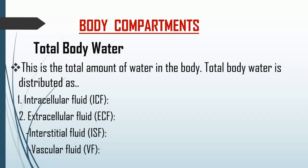Now let's look at body compartments. Total body water is the total amount of water in the body, distributed in different compartments. Number one, we have intracellular fluid — fluid found inside your body cells. Number two is extracellular fluid — the total amount of fluid found outside of the cells and in the blood vessels. Extracellular fluid is divided into interstitial fluid, which surrounds the cells and is sometimes called bathing fluid, and vascular fluid, also known as plasma or intravascular fluid — the fluid component of blood.